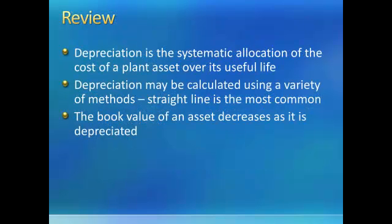In review, depreciation is the systematic allocation of the cost of a plant asset over its useful life. Depreciation may be calculated using a wide variety of methods, but straight line is the most common. The book value of an asset decreases as it is depreciated. One thing to note is that book value does not attempt to match market value. Book value is simply the cost minus the amount that has been allocated to expense since the asset was purchased. Book value and market value are separate concepts, and the goal is not to make book value equal to market value. That concludes our module on depreciation.